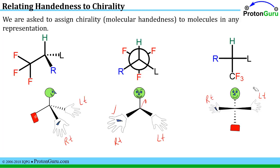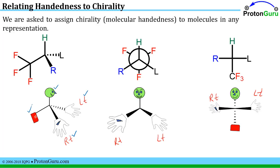These three scenarios — doing push-ups from the side, doing push-ups facing us, or walking towards us — are representations of people that we can correspond with line-bond, Newman projection, or Fischer projection structures. All I need to do is correlate the right hand, left hand, head, and feet with the corresponding parts of the line-bond structure. So this is the molecule's head, this is the molecule's right hand, this is the molecule's left hand, and this is the molecule's feet.